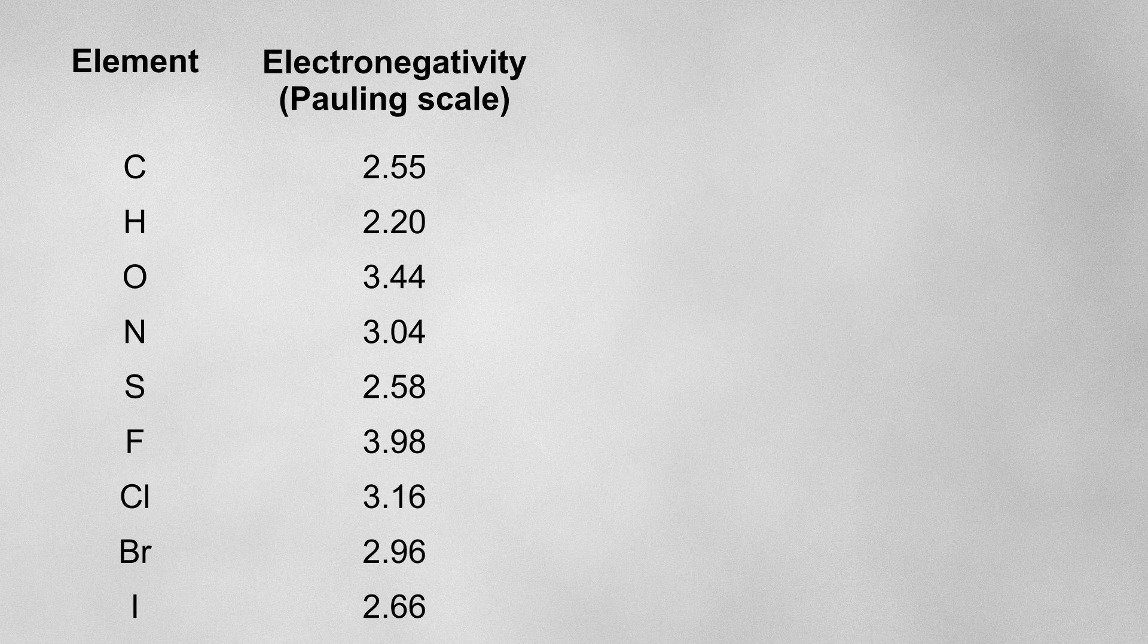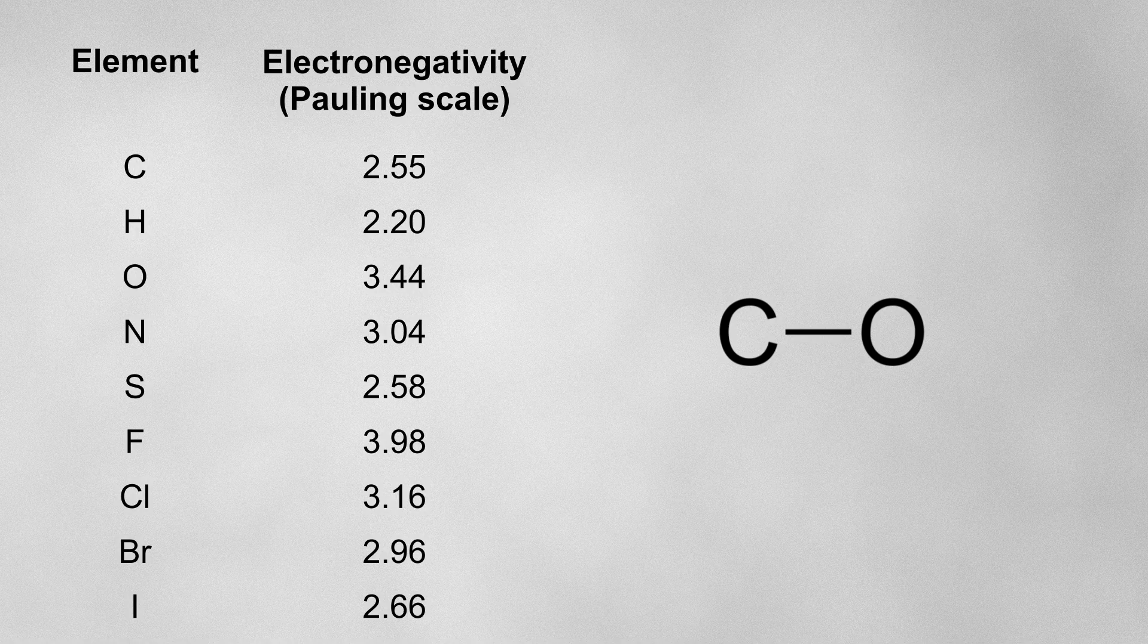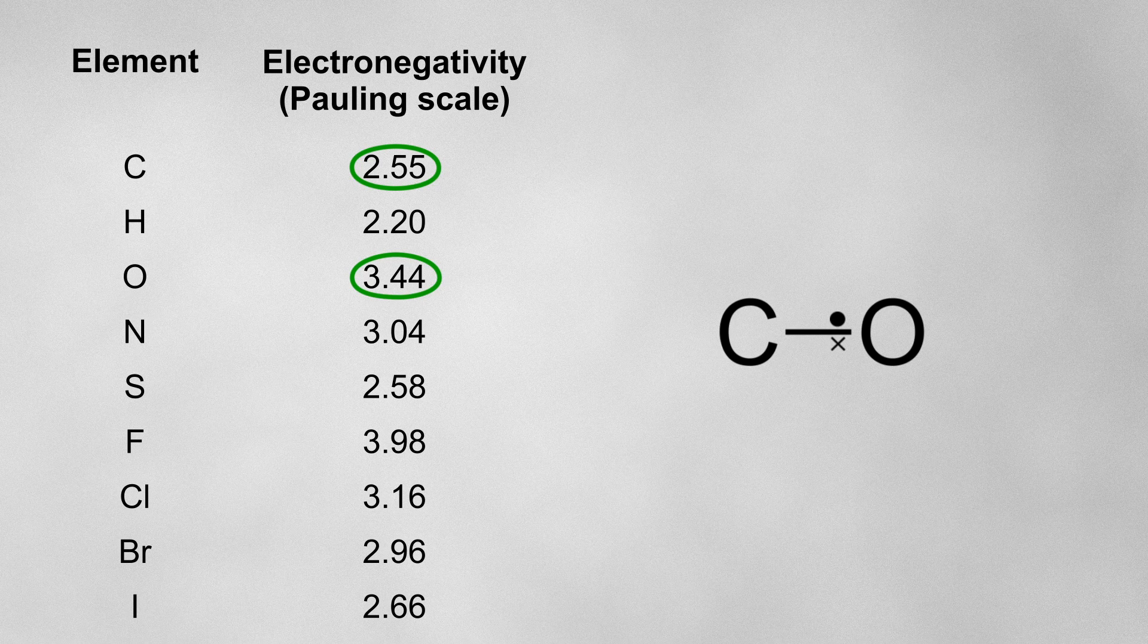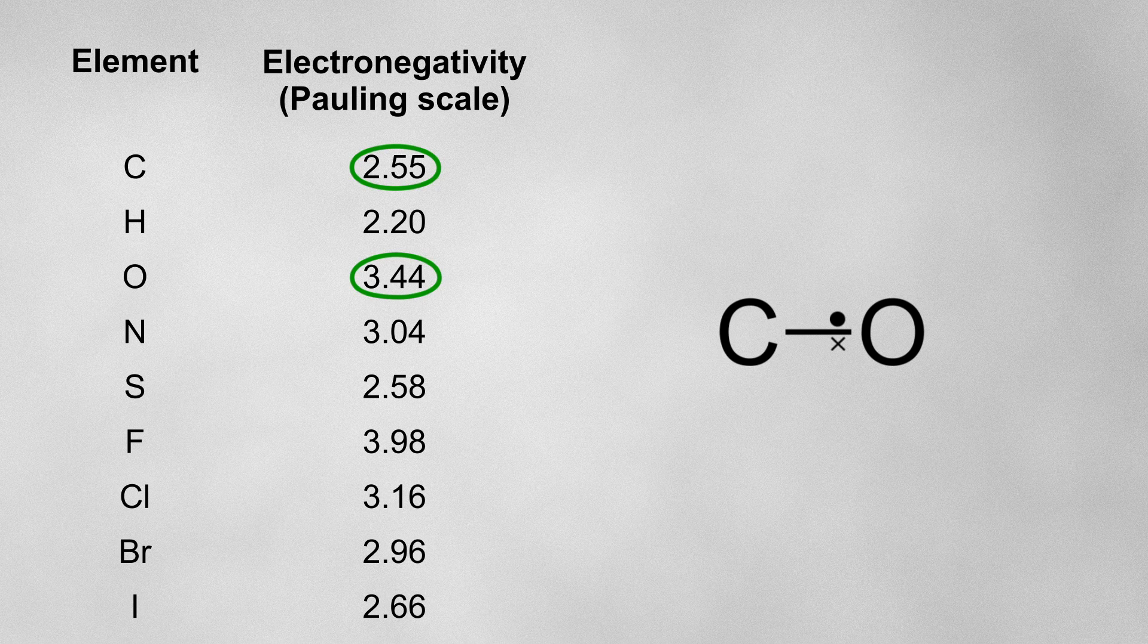So, for example, if a carbon atom is covalently bonded to an oxygen atom, we can see that the oxygen is significantly more electronegative than the carbon atom, so the bonding pair of electrons between these two atoms will be pulled closer to the oxygen atom. The oxygen atom hasn't fully gained the electrons to form an ion, the electrons are just sitting a bit closer to the oxygen atom than they are to the carbon atom.